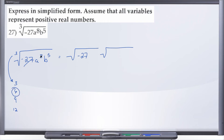Since 8 is not a multiple of 3, we ask: what is the next number down from 8 that is a multiple of 3? That would be 6. So when we break a to the eighth into good stuff and bad stuff, 6 of those powers are good stuff because 6 is a multiple of 3, and the remaining 2 are bad stuff. And 6 plus 2 gives us 8.